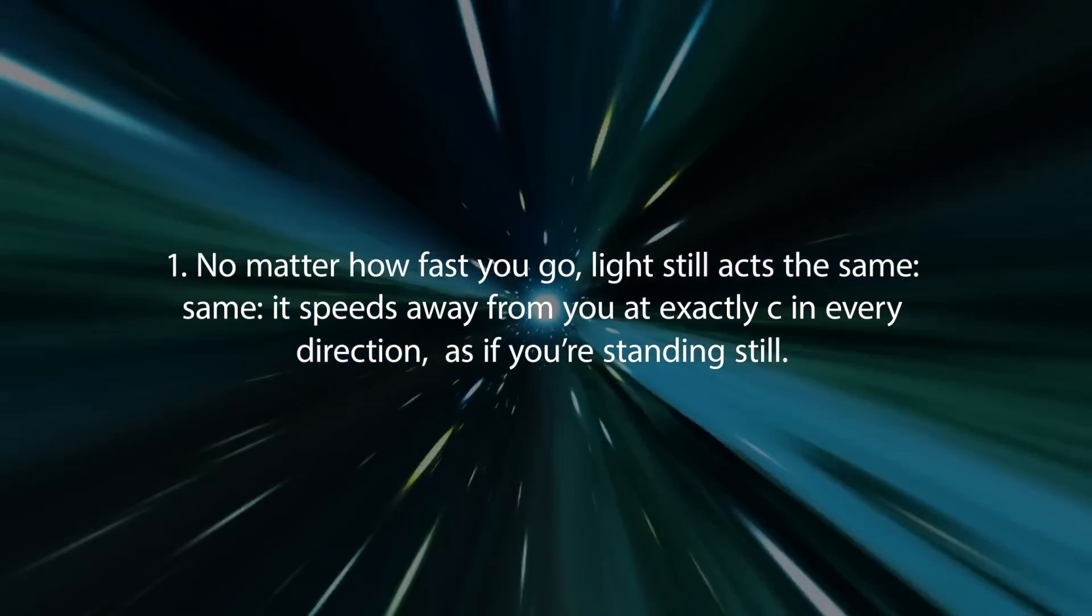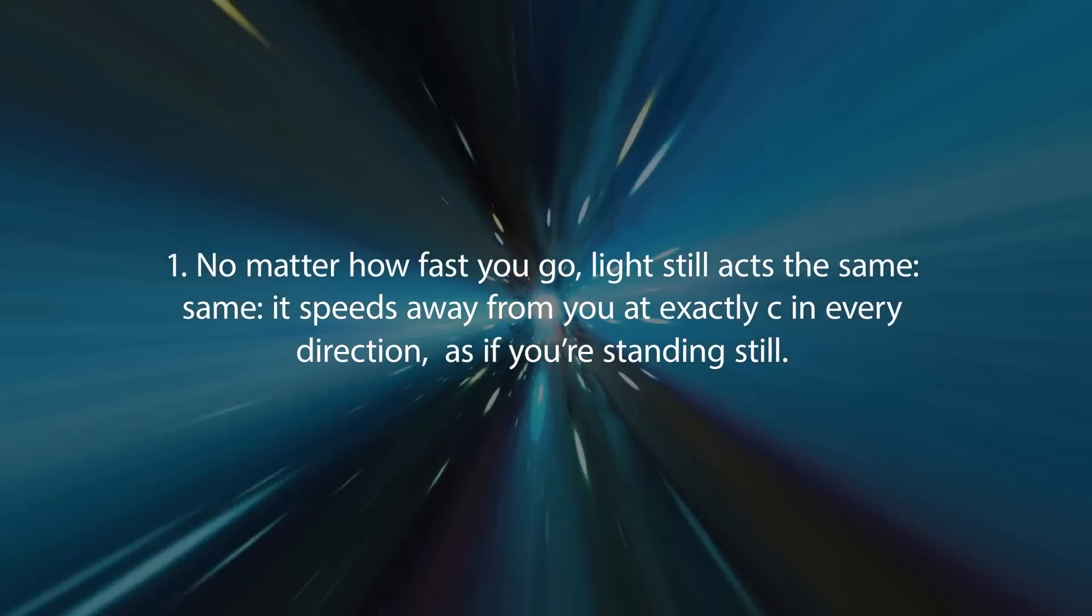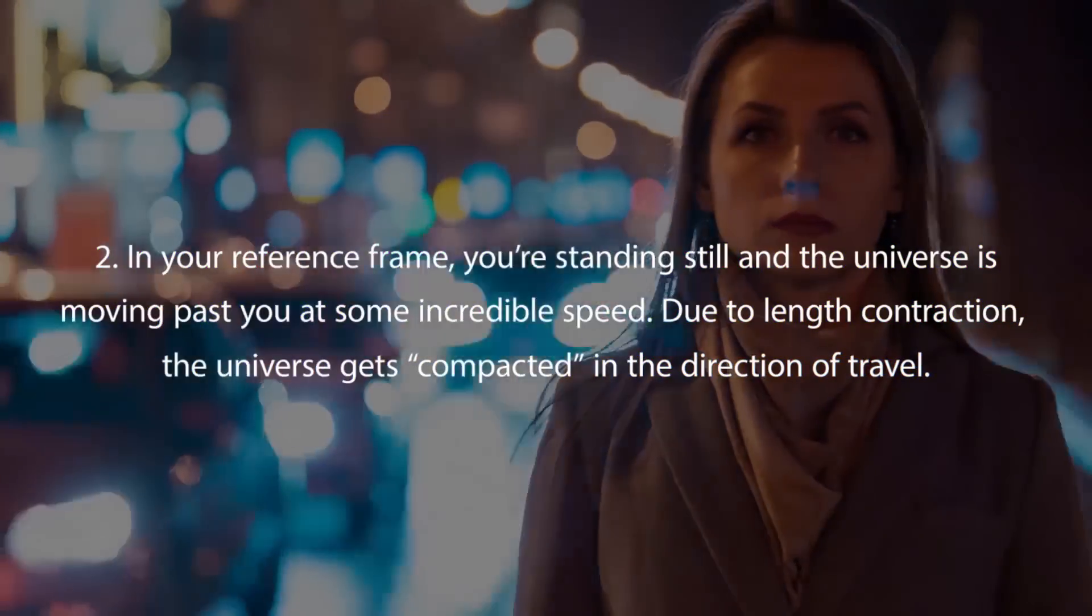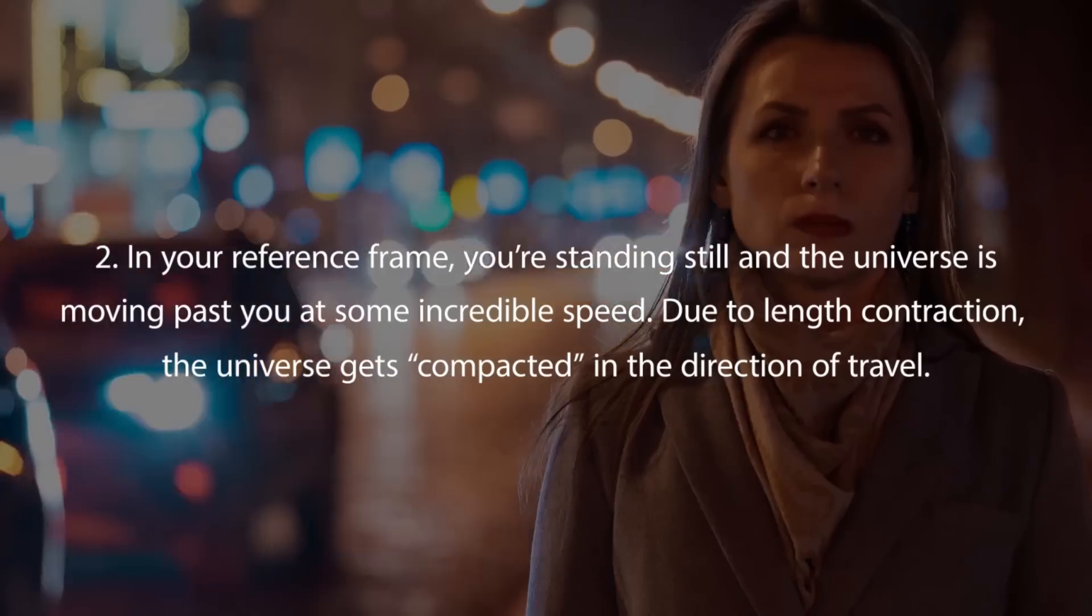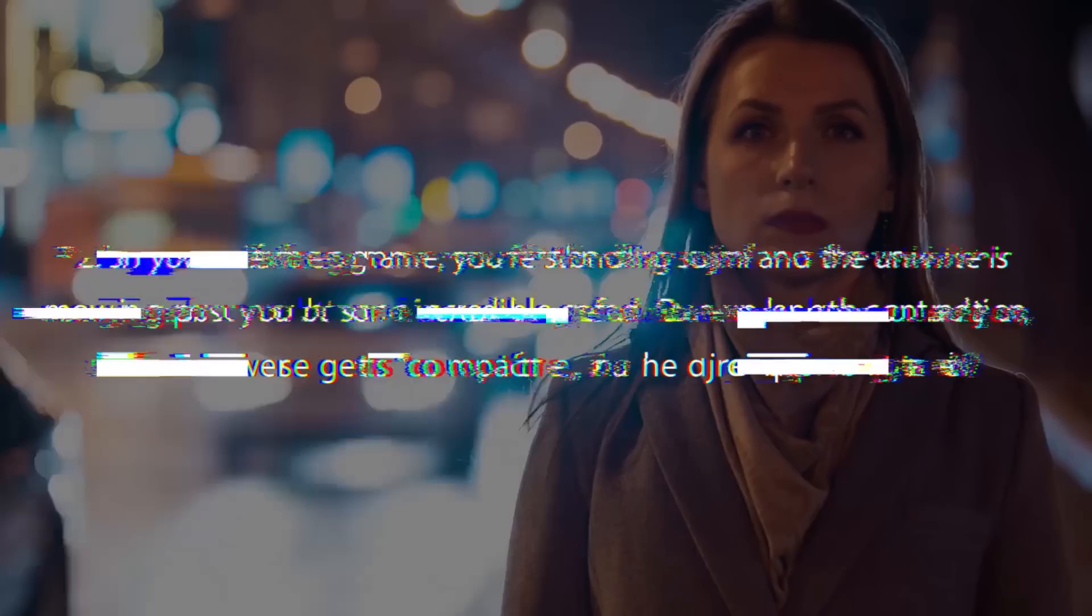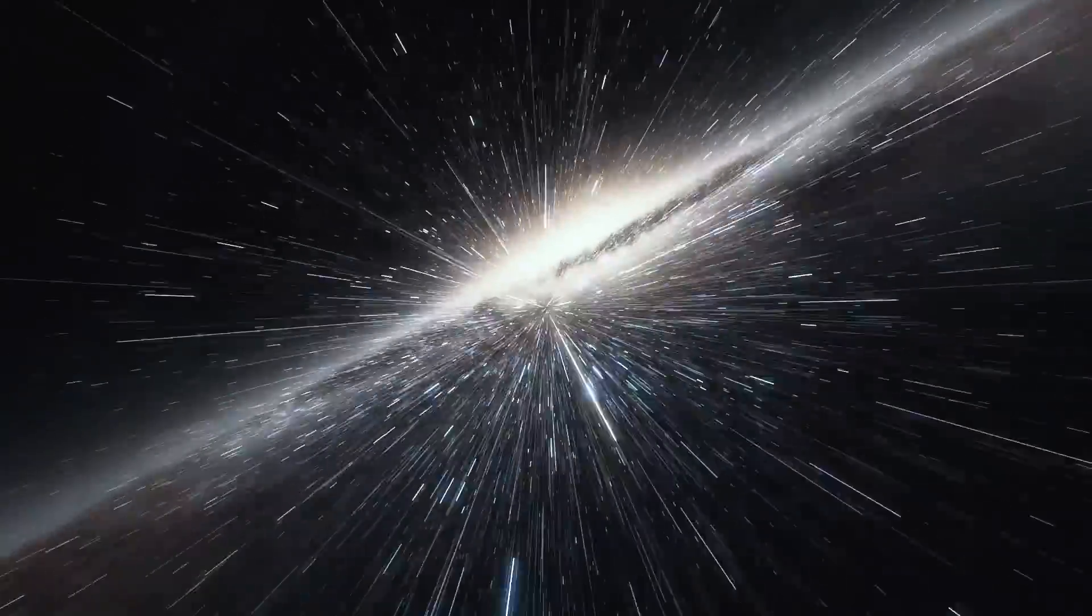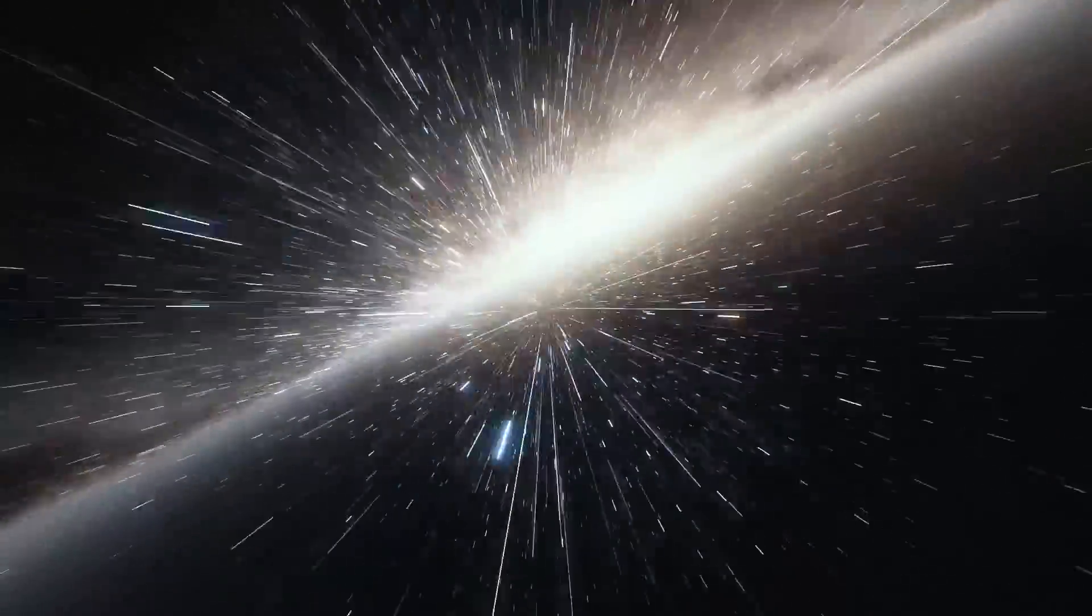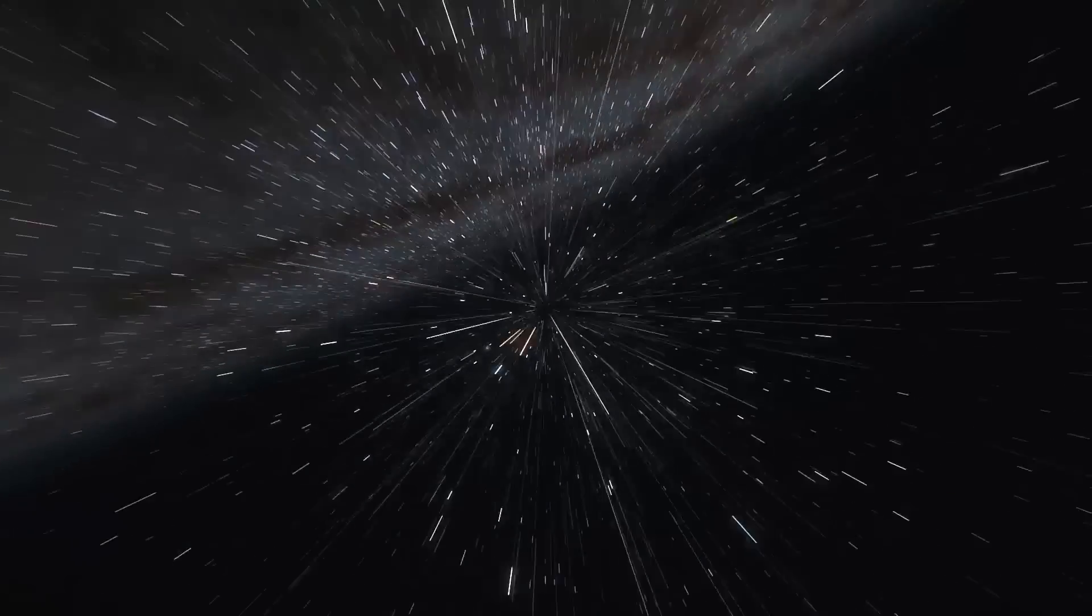However, some odd things will happen along the way. Number one: no matter how fast you go, light still acts the same. It speeds away from you at exactly C in every direction, as if you're standing still, because in your reference frame you are standing still. Number two: in your reference frame, you're standing still and the universe is moving past you at some incredible speed. Due to length contraction, the universe gets compacted in the direction of travel, and so Andromeda is not 2.5 million light-years away anymore. In fact, it's less than a light-hour away, about 670 million miles, which means you can get there in an hour without ever exceeding the speed of light.